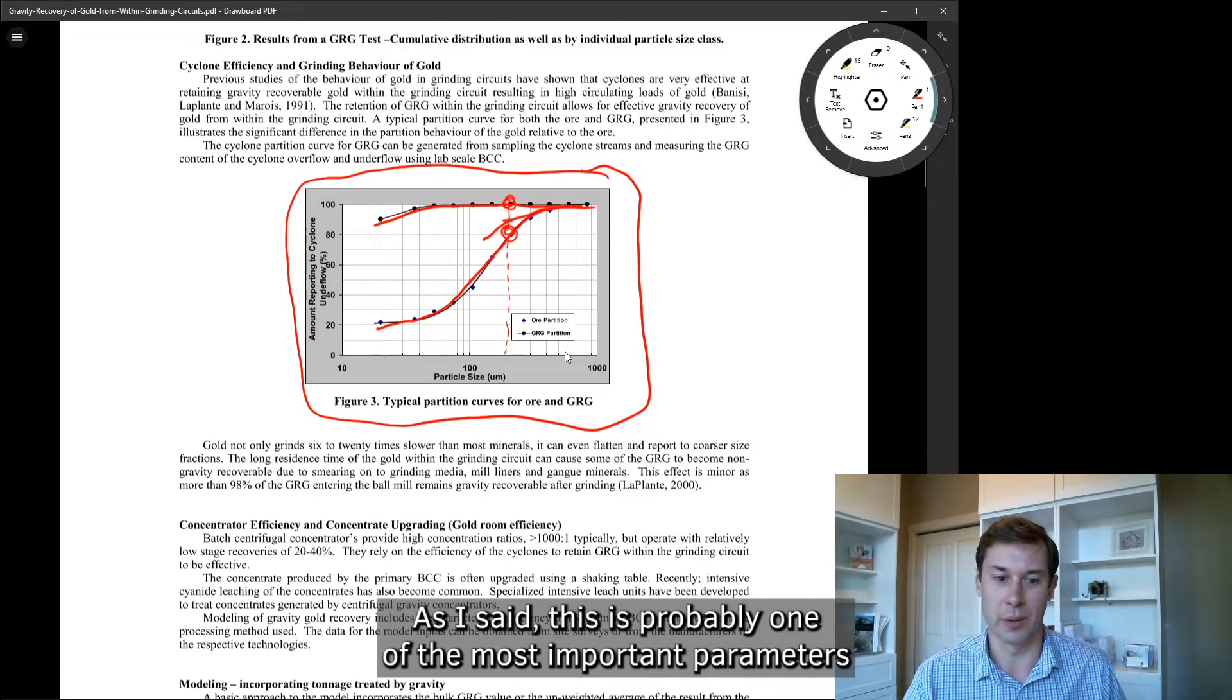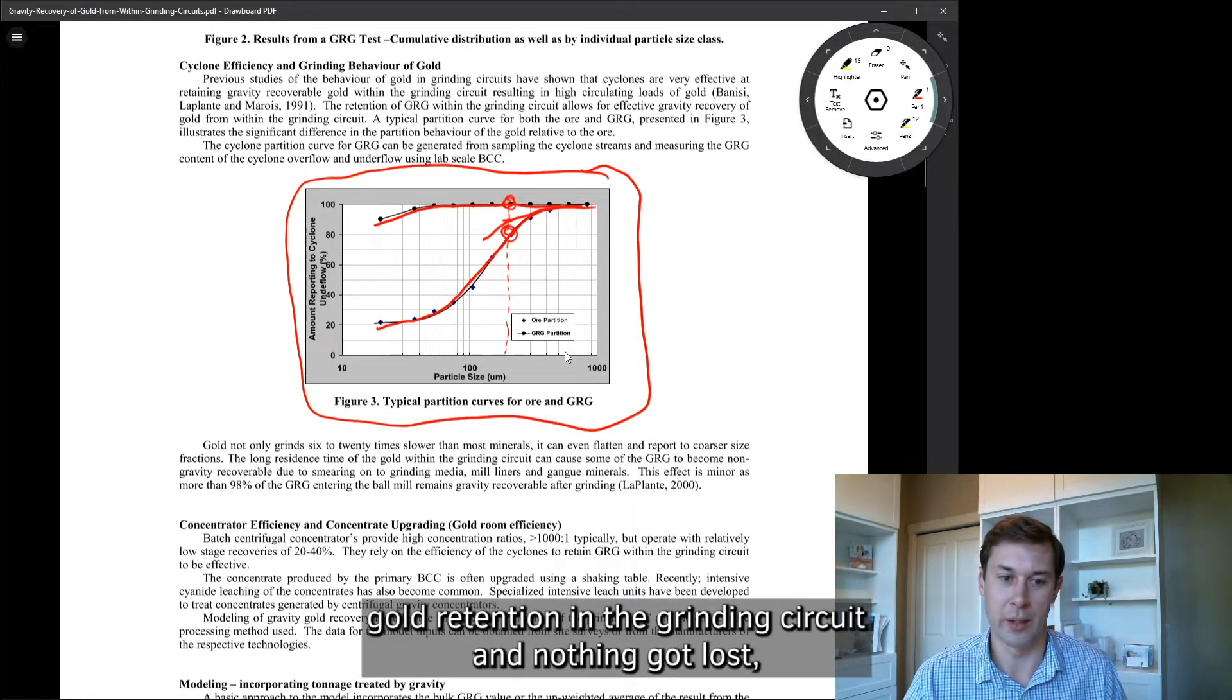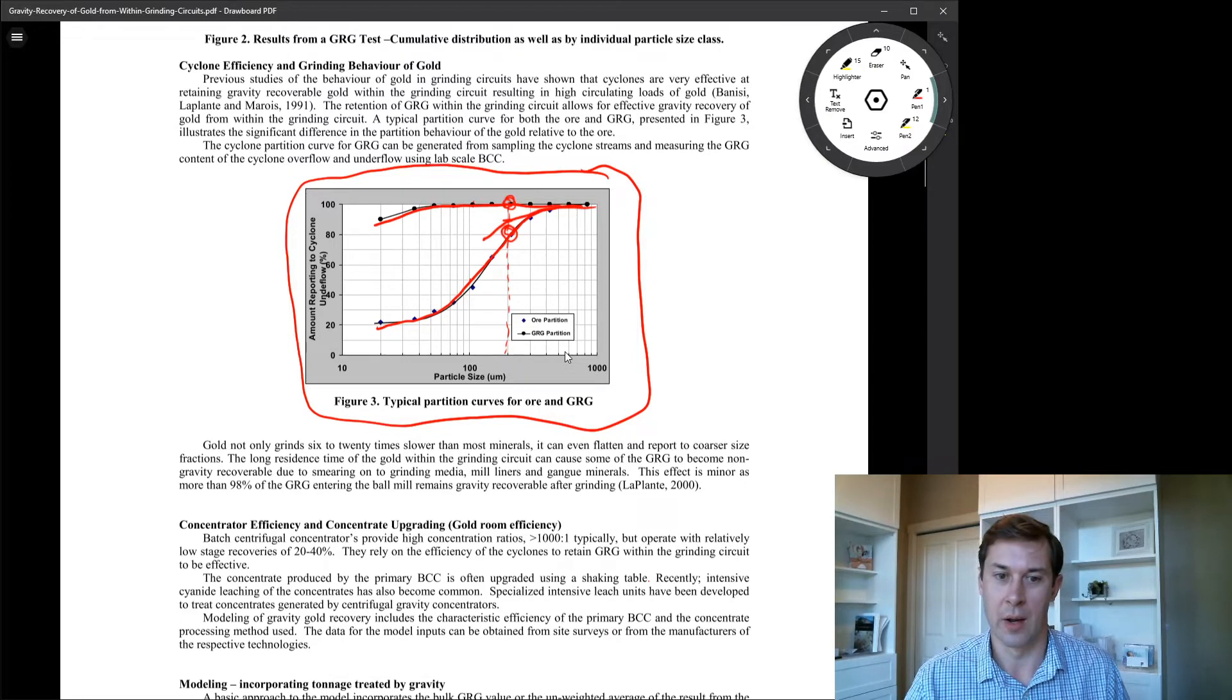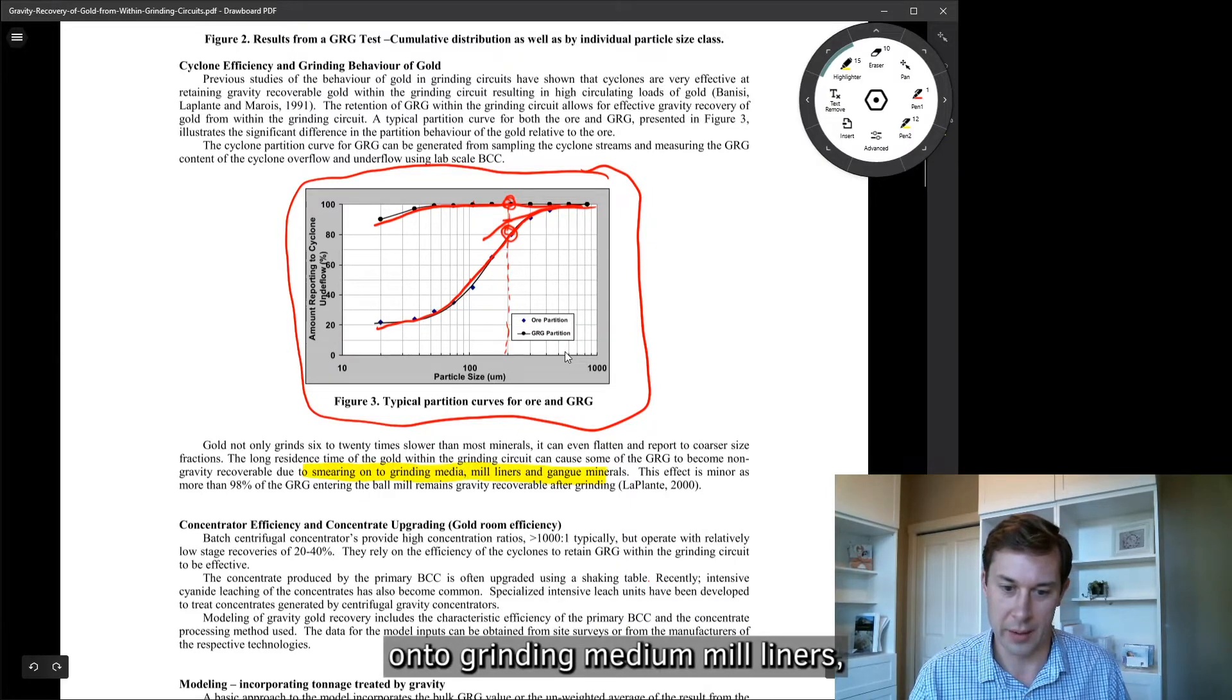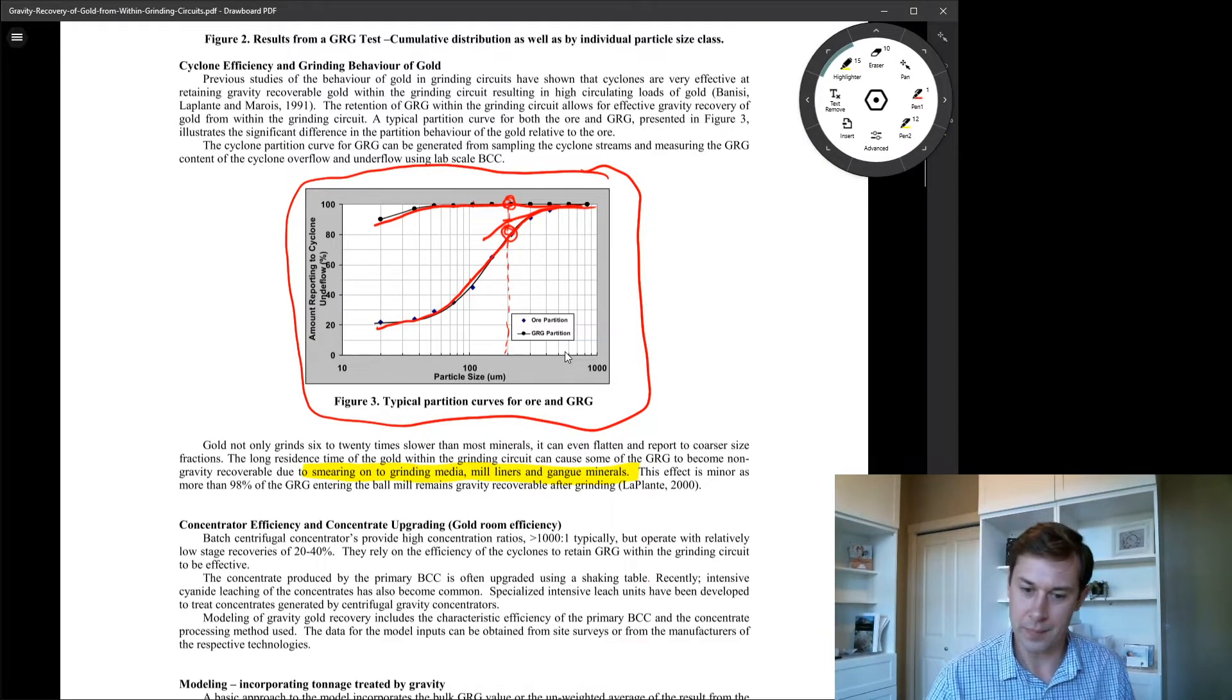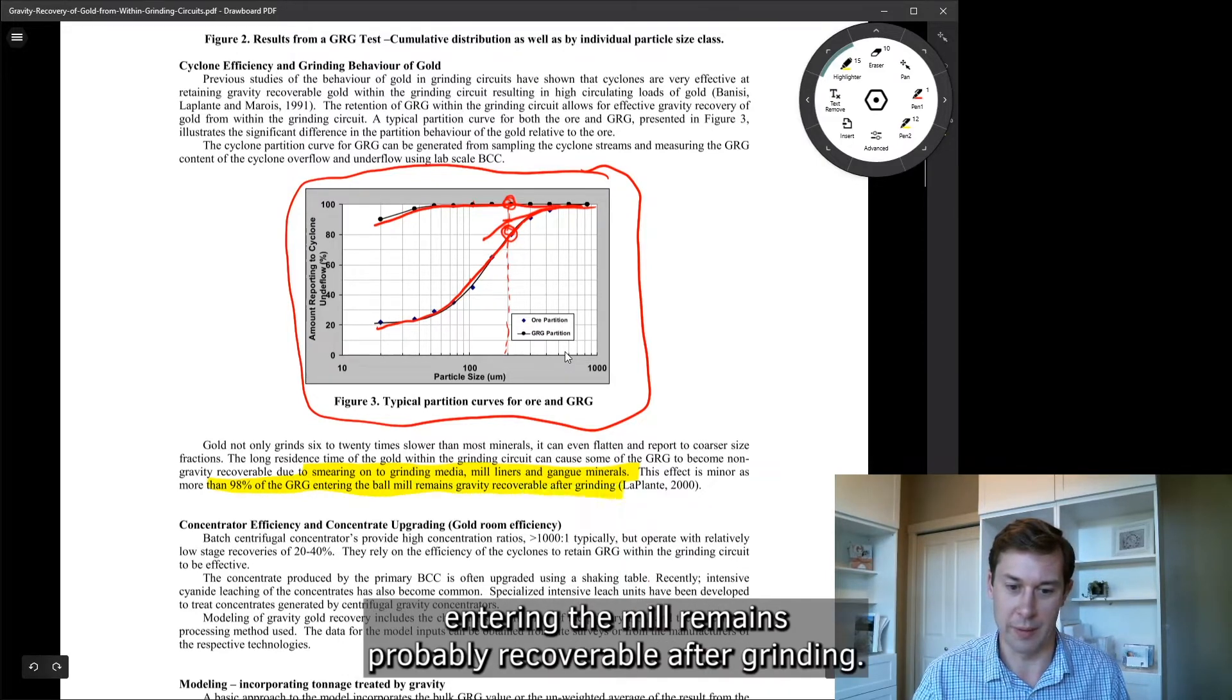As I said, this is probably one of the most important parameters because if you had 100% gold retention in the grinding circuit and nothing got lost, then it really wouldn't matter how efficient the gravity concentrator is. Then all you're up against is gold getting smeared onto grinding media, mill liners, hanging up in pump boxes, but it's trapped there in the circuit.